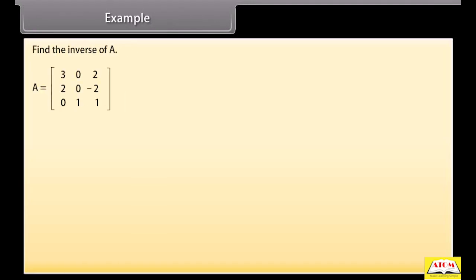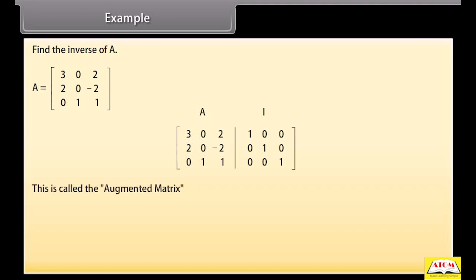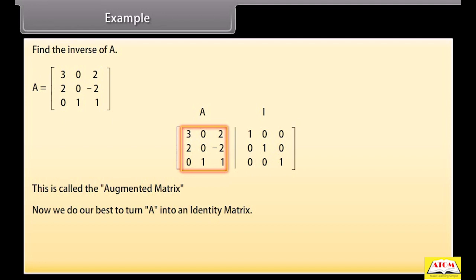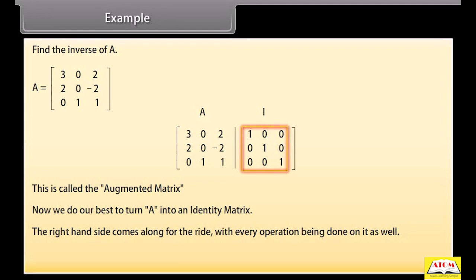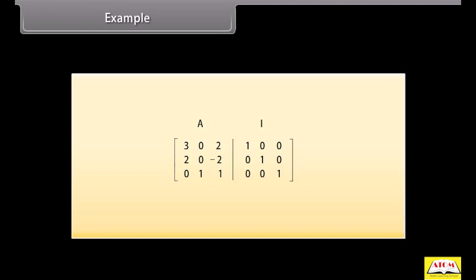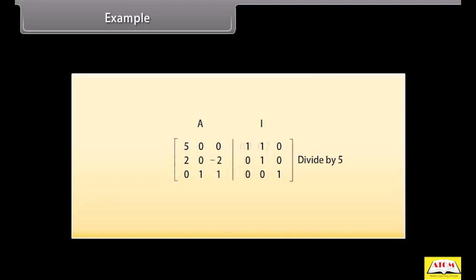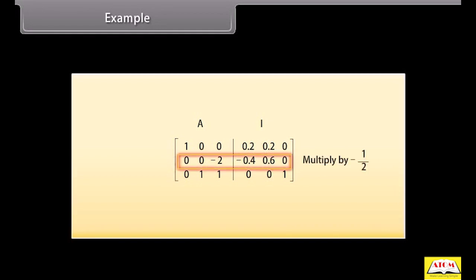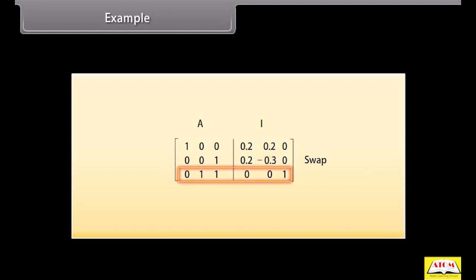Example: Find the inverse of A. We start with matrix A and write it down with an identity matrix I next to it — this is called the augmented matrix. Now we do our best to turn A, the matrix on the left, into an identity matrix, and the right-hand side comes along with every operation. We can only do elementary row operations, and we must do them to the whole row. Our first step is to add row 2 to row 1. Then divide row 1 by 5. Then take two times the first row and subtract it from the second row. Multiply the second row by −1/2. Now swap the second and third row. Last, subtract the third row from the second row. And we are done.